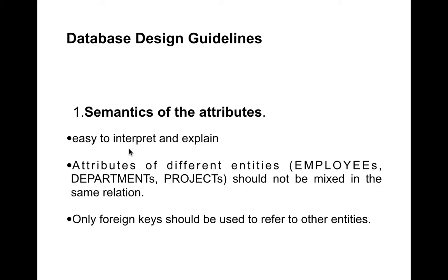The second thing is we should not mix attributes of different entities together. In the common example we discussed, the employee table consisted of only employee details, and we had separate tables for department and project information — we didn't combine all three into a single table. Keeping information of different entities in different relations is also a good practice, and you can connect between these entities using foreign keys. Foreign keys are used to link between two tables or entities.